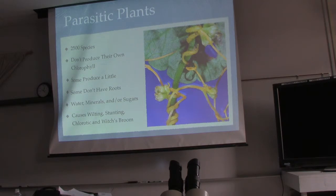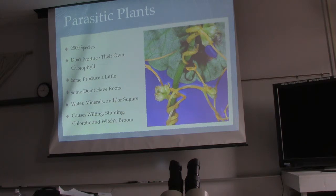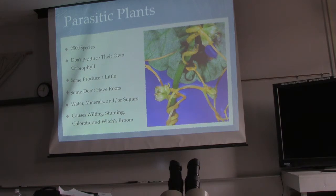Don't forget about parasitic plants — they exist. They grab onto your crop, stick their little straws into the stems, and suck out the juice you've spent money and fertilizer producing. They don't produce their own chlorophyll, so they get energy from elsewhere. Most of the time they don't have roots. They consume water, minerals, and sugars from the host plant, causing wilting, stunting, chlorosis, and witch's broom — where only the top of a tree has growth while the rest is bare.